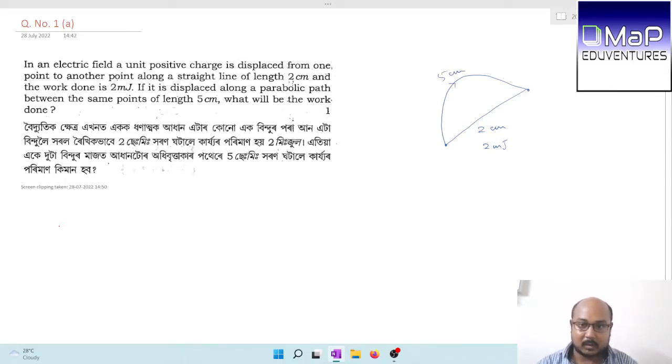It's a simple concept. The electrostatic field is a conservative field, similar to the gravitational field. The amount of work done is simply dependent on the displacement, on the initial and final position. The length of path doesn't matter. Since the displacement, whether along the 2 cm path or the 5 cm path, the displacement is same.